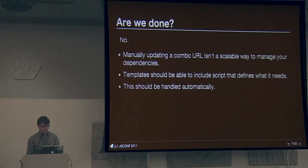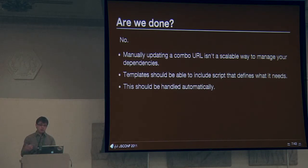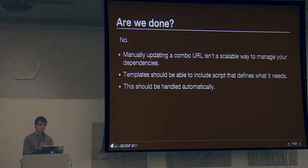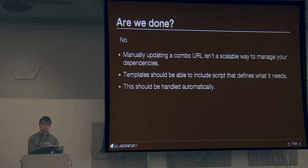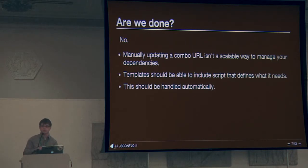I don't think this is the answer. Manually updating a combo URL every time you change something isn't scalable. Your application isn't usually just one page — you may not need an autocomplete widget or a scroll view on every page. You want templates or parts of your application to just include what they need. And I don't think that's really easy, and even if you can do it, it's not that great for performance.